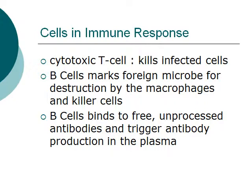Now let's talk about B cells. What B cells do is mark a foreign microbe for destruction by macrophages and killer cells. They do this by binding to free, unprocessed antibodies, which then triggers antibody production in the plasma.